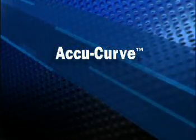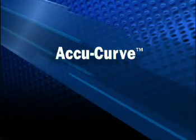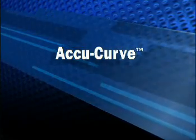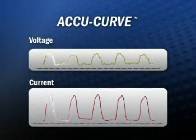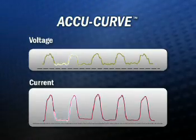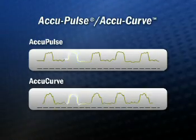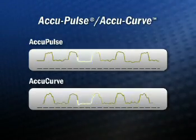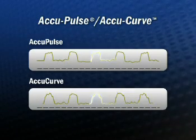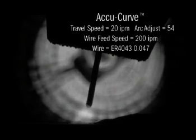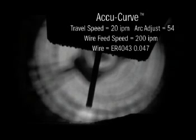AccuCurve is another variation of the AccuPulse process. The process still uses the same CV adaptive scheme and waveform topology as the AccuPulse process. The main difference is the current transitions from peak to background and from background to peak. In AccuPulse, they were done with linear CC transitions of amps per millisecond. In AccuCurve, they are done with curves or transitions of amps per millisecond squared. This curved transition aids in ball detachment and gives the transfer a softer feel without sacrificing the tight arc lengths that allow for better puddle control. The waveform is primarily used on aluminum and stainless steel.